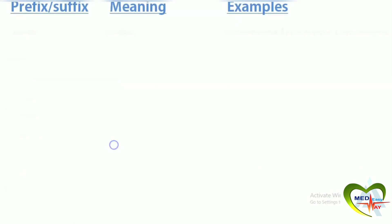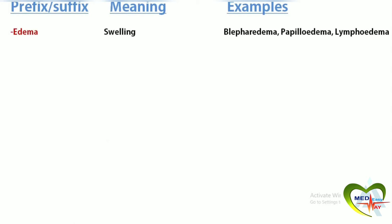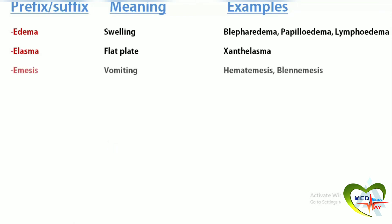Edema means swelling. Blepharoedema is swelling of the eyelids. Papilloedema means swelling of the optic nerve. Lymphoedema is swelling of the arms or legs. Elasma means flat plate. Xanthelasma is a yellowish deposit of cholesterol underneath the skin. Emesis means vomiting. Hematemesis is the vomiting of blood.